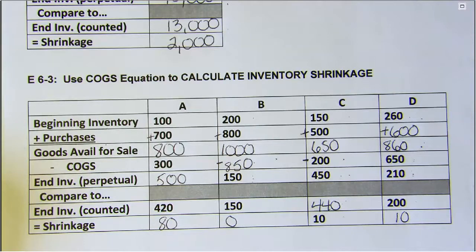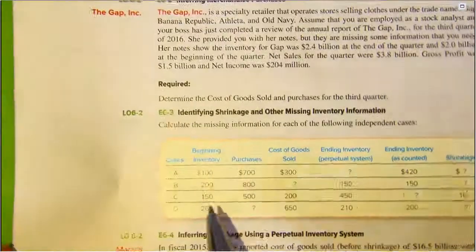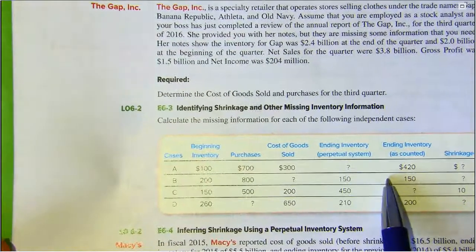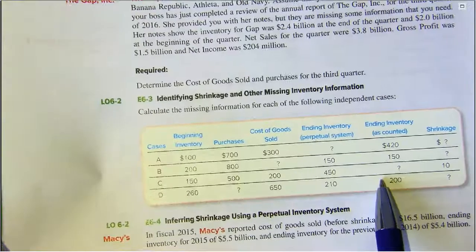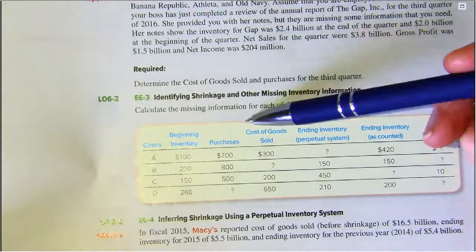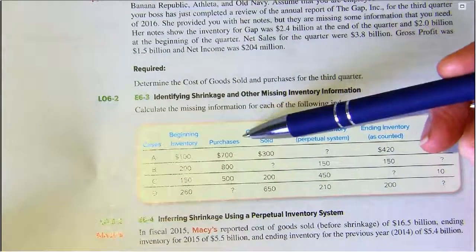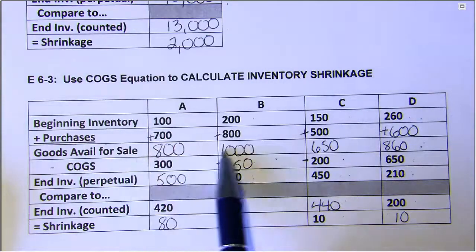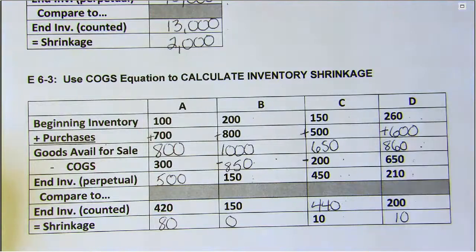That ends our demonstration. I wanted to mention one other thing: when we look at our presentation in Connect, both online and in our textbook, notice that there's no column for goods available for sale. I suggest you add that calculation in — not only does it make more sense, but it's easier to do your calculations. Have a great day.